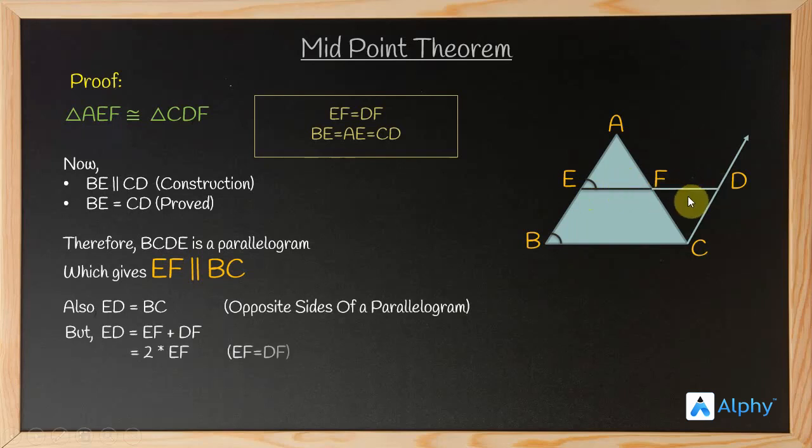We can say that it is equal to 2 times EF because EF is equal to DF as we have seen here. If ED is equal to 2EF, can't we say that EF is half ED? That's what we have written here. EF is equal to half of ED. But if you see, ED is equal to BC. So EF will be equal to BC divided by 2, or EF is half the length of BC.